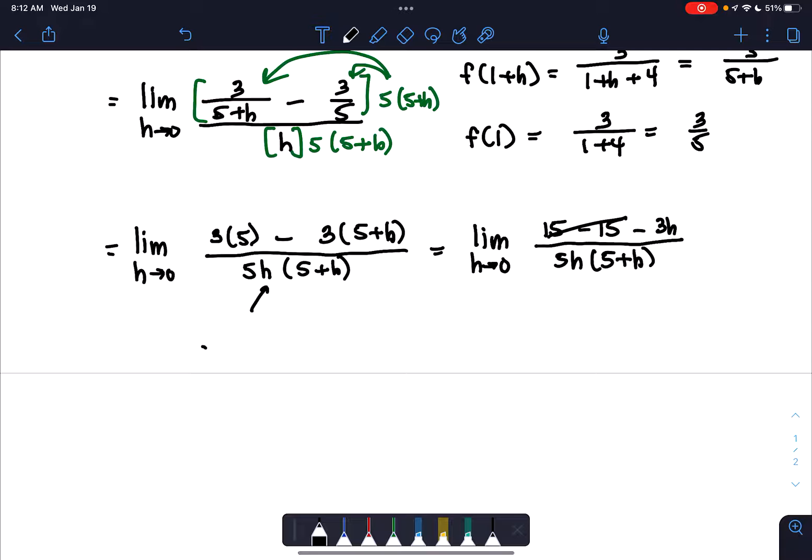The 15s cross out. So we have the limit as h approaches 0 of negative 3h over 5h times 5 plus h. And there it is. The h's cancel out.